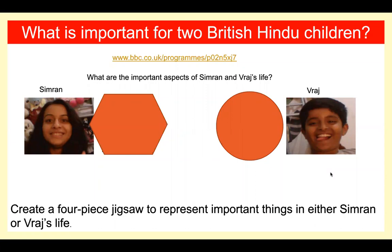We've just watched the video about those two children — brother and sister — and you saw lots of things. They told you about things that are important to them: hobbies and things they do, and also things about their religion. What I would like you to do now is create a four-piece jigsaw, just like this one, to represent things you think are important to either of them — Simran or Vraj. If you want to re-watch the video, you've got the link or you can rewind the video I've made for you. This might be a good time to pause the video while you complete that.